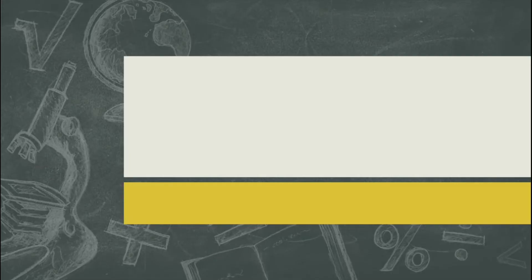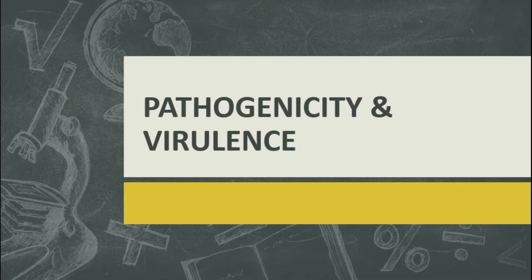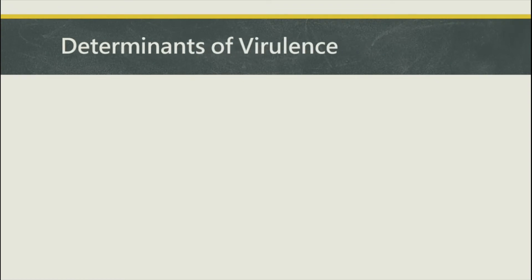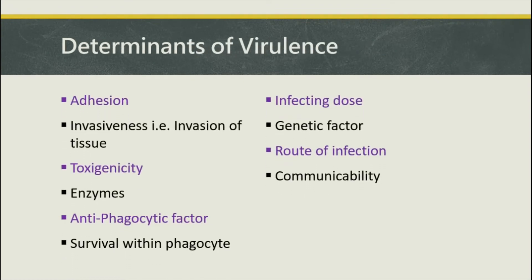Hello everyone, we will continue our topic pathogenicity and virulence. I am Dr. Sharad Deshmuk from S.S.J. Swal College, Arjuni Moore. In today's lecture, we will continue the determinants of virulence. We have already seen Adagen, Irrimaginase, Toxigenicity, Enzymes, Antiphagocytic factor, and Survival within the Phagocytes — all these factors have been discussed earlier.